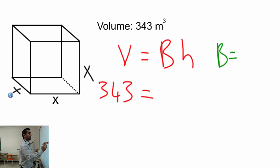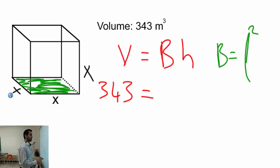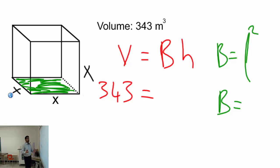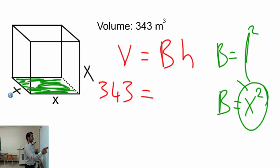Volume equals 343, and capital B means the base area. The base is a square, so the square area formula is l squared. Since all sides are x, the base area equals x squared. We can't go further than that, so base area is x squared.